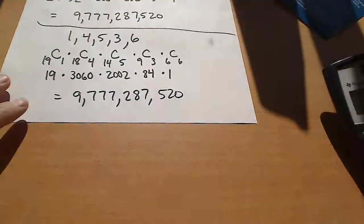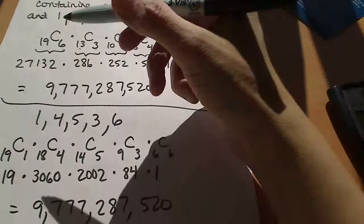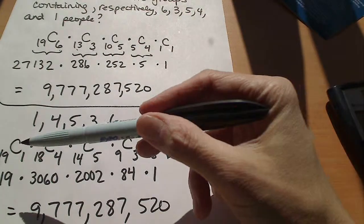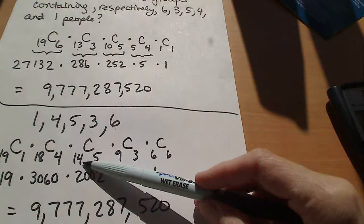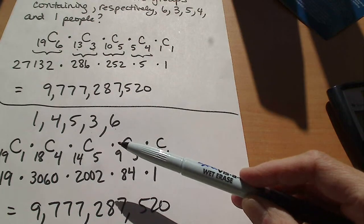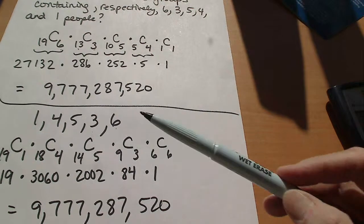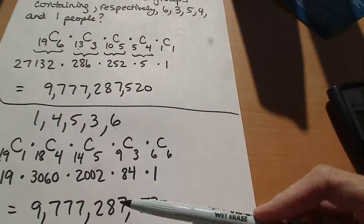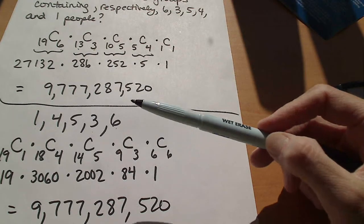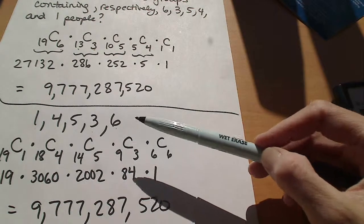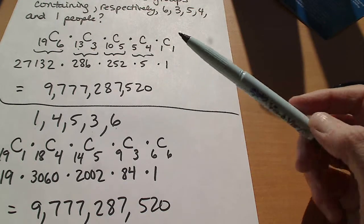Okay, so the point being then that you can count this any way you want. You can start with any of the groups and you just diminish the number that you're pulling from because you've already placed some in a group. And you'll end up with the same answer no matter how you count this as long as you're holding to these principles here. And that's it for this problem.